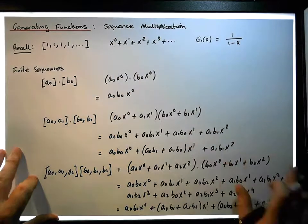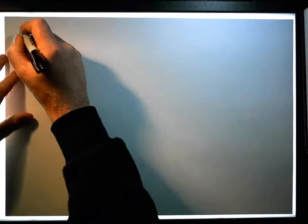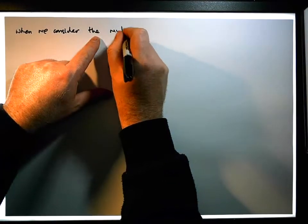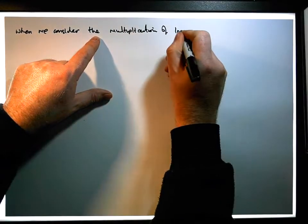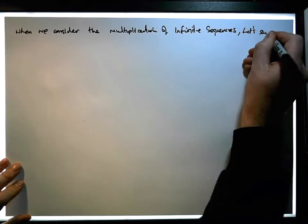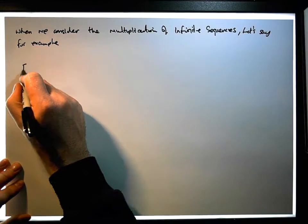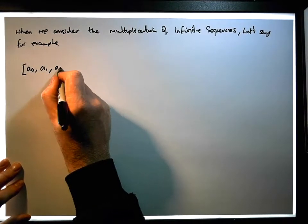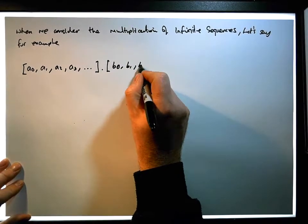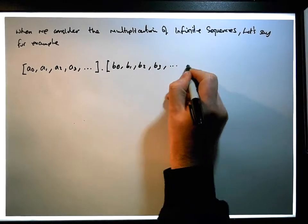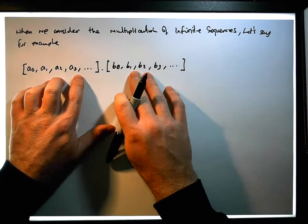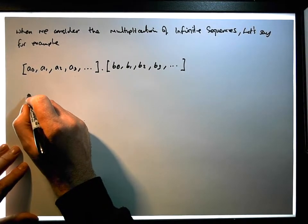So effectively, when we have infinite sequences, consider the multiplication of infinite sequences. Let's say we have a0, a1, a2, a3, ... multiplied by b0, b1, b2, b3, ... These terms can also be converted into a generating power series.